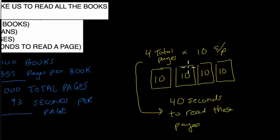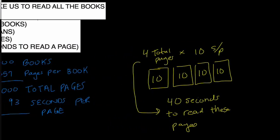You can see right here, four pages, 10 seconds on every page. So it tells me, in general, if I multiply my seconds per page, times the total amount of pages, that tells me how long it's going to take me to read all those pages. So if I go over here,